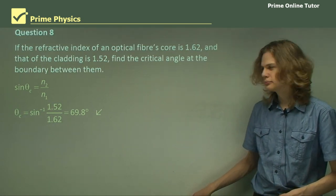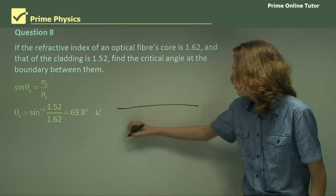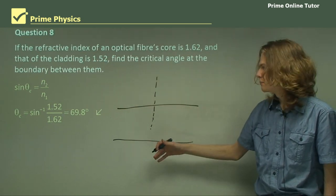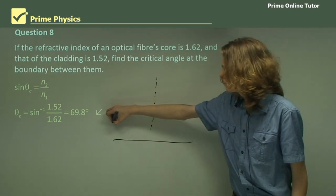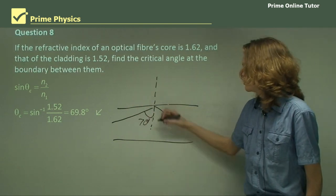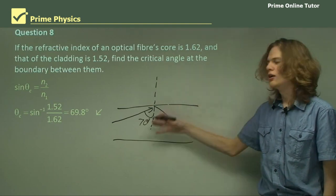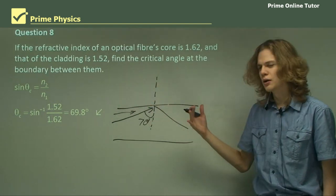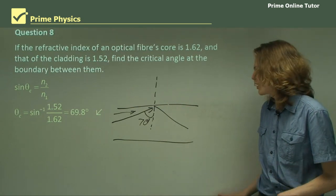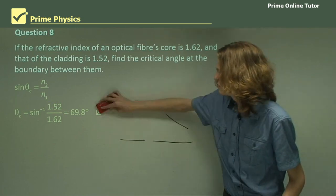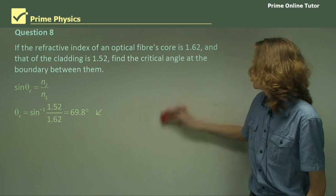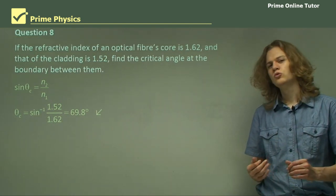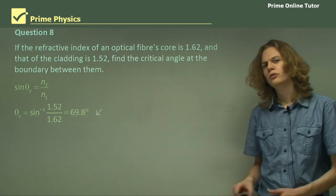So remember, this is the angle to the normal. If I draw the inside of the optical fiber with the top and the bottom, the normal will be perpendicular to that, and so this 70 degrees or so will look like this. At angles smaller than this, we'll get light refracting and going into the cladding. At angles larger than this, we'll get total internal reflection and no refraction whatsoever. Remember that when we get total internal reflection, we're not refracting — the only way we can get this is if we're moving from a material with a very high refractive index into a material with a low refractive index.